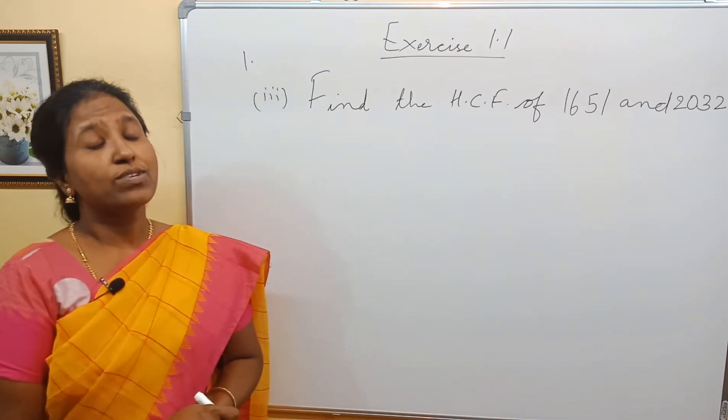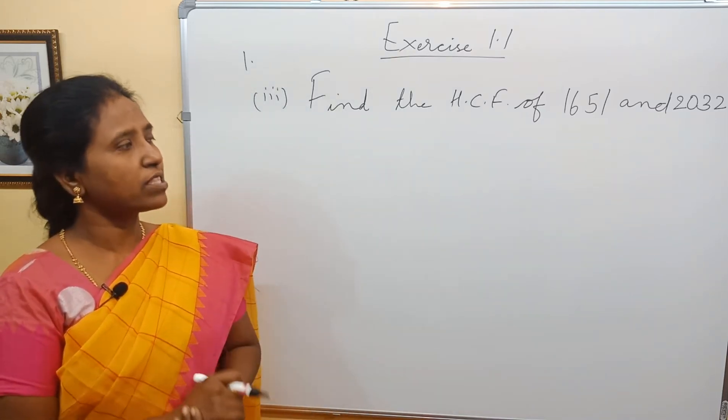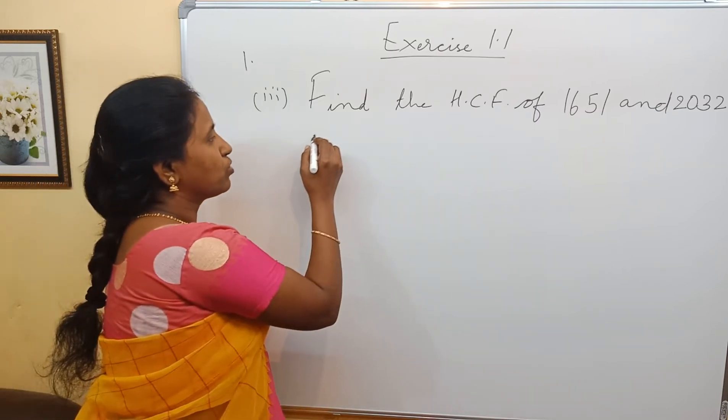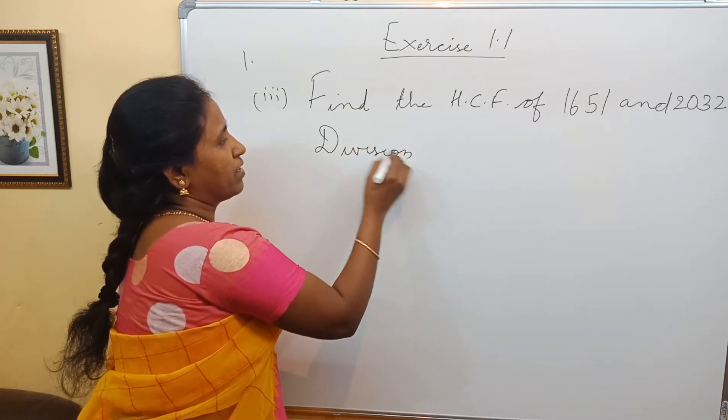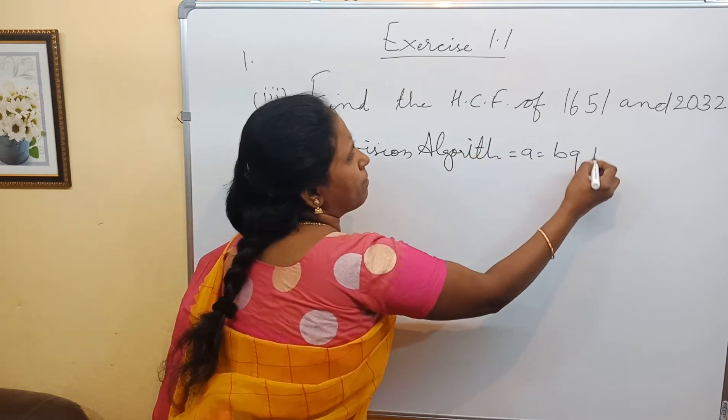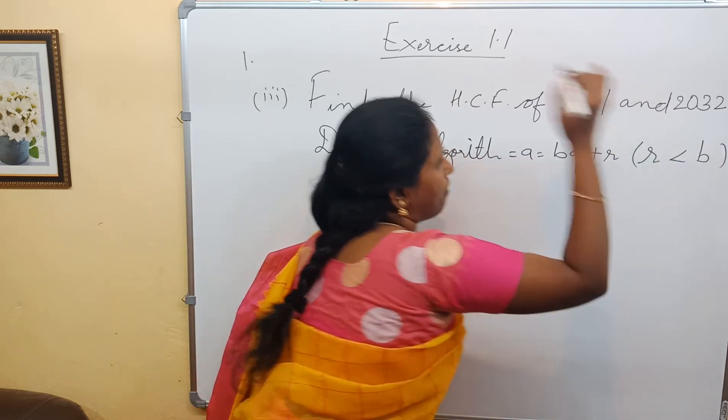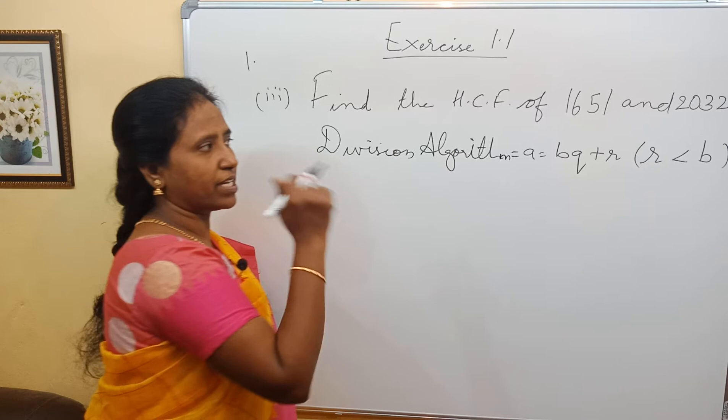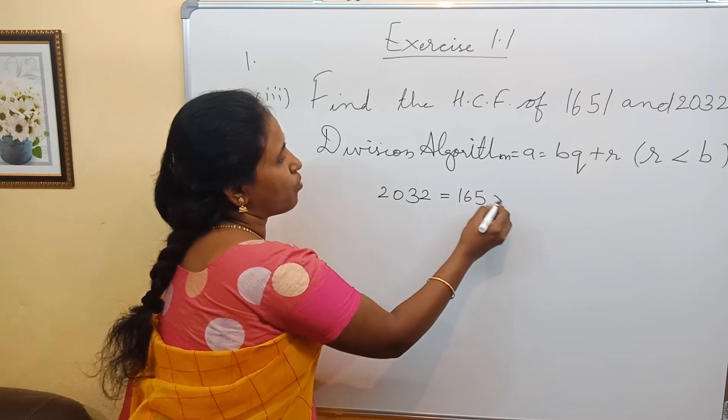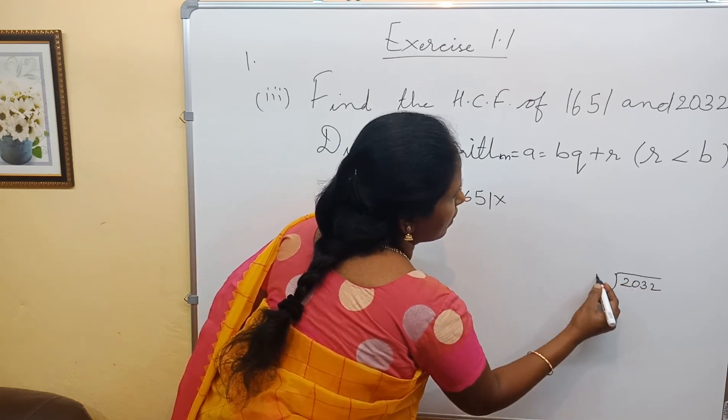How do we go about it? Look at the two numbers. Which is the bigger one? Is 1651 bigger or 2032 bigger? 2032 is bigger. First, write down the formula. What is the algorithm? Euclid's division algorithm is A equals BQ plus R, where R is less than B. Now, as 2032 is a bigger number, we go this way: 2032 equals 1651 into what? We have to divide 2032 by 1651.